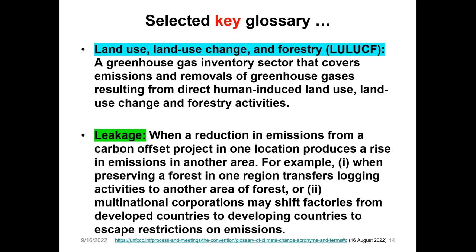Leakage is when a reduction in emissions from a carbon offset project in one location produces a rise in emissions in another area. For example, when preserving a forest in one region transfers logging activities to another area of forest, or when a multinational corporation shifts factories from developed to developing countries to escape restrictions on emissions — economists call this a race to the bottom.